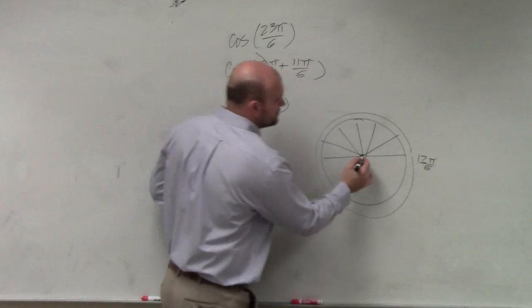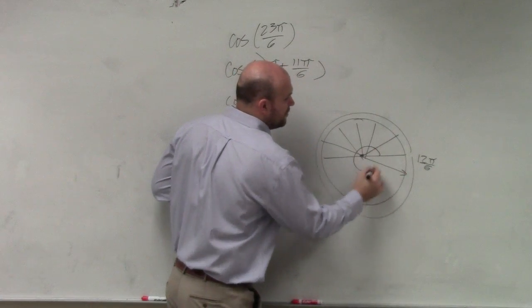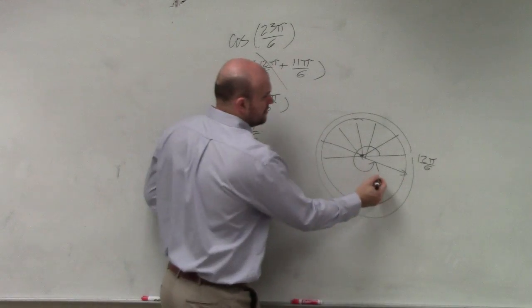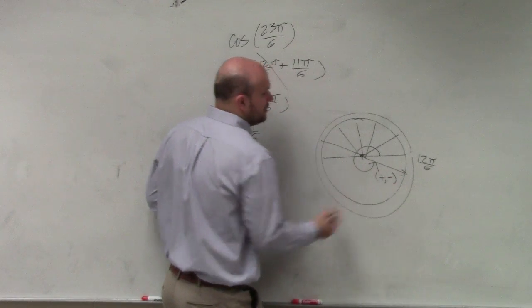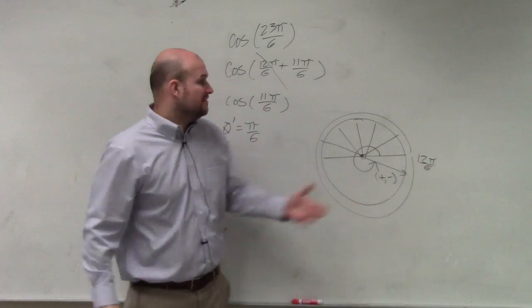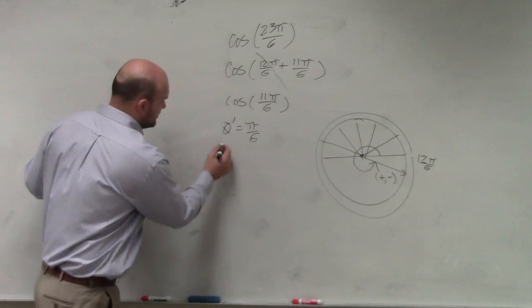And which quadrant, though, is this angle in? Fourth quadrant. What's negative in the fourth quadrant? Just the y coordinates. So cosine is still positive. Then I can use my reference angle